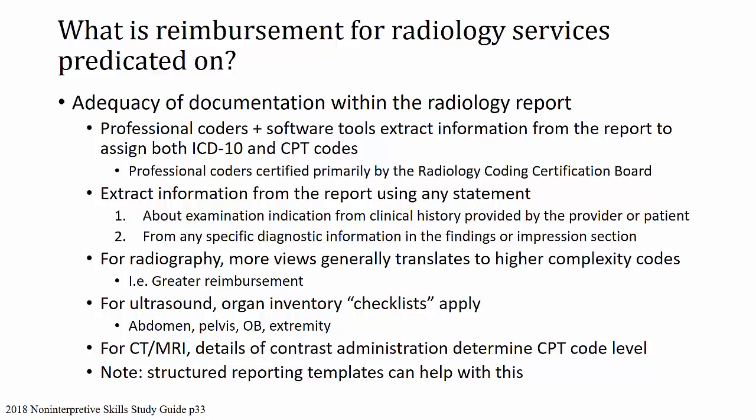For radiography, more views generally translate to higher complexity codes and greater reimbursement. For ultrasound, there's generally an organ inventory checklist that applies, especially for abdomen, pelvis, obstetrical, and extremity ultrasounds. For CT or MR, details of contrast administration also help determine the CPT code level. Structured reporting templates can help ensure all indications are included every time, especially for ultrasound checklists.